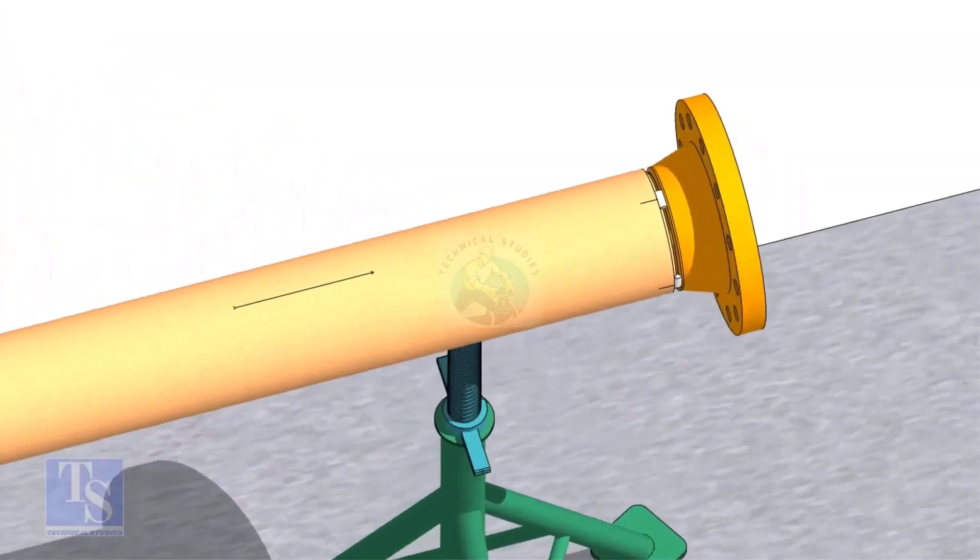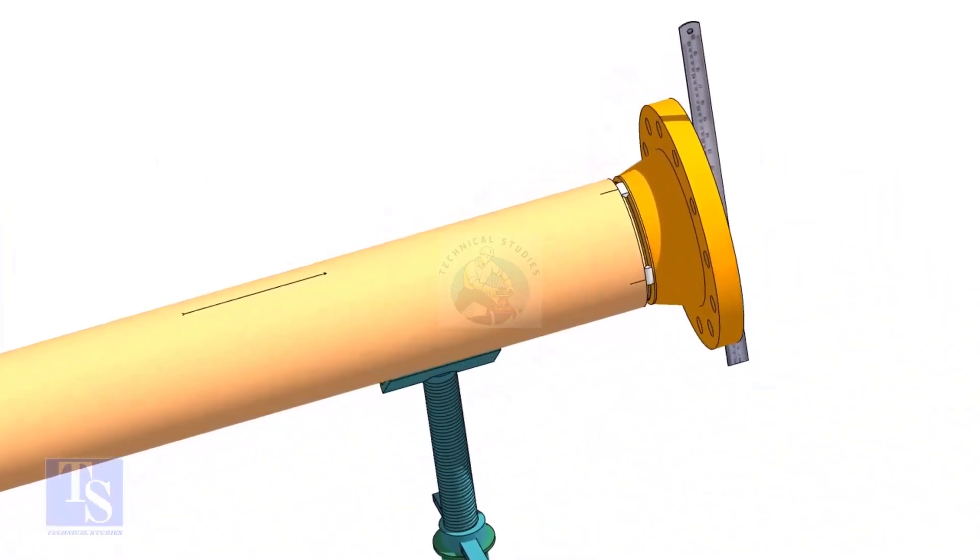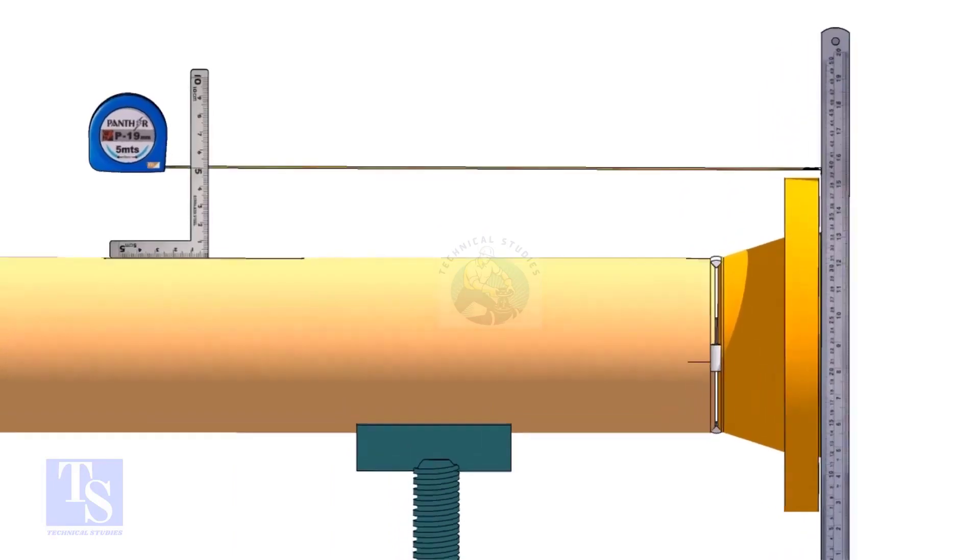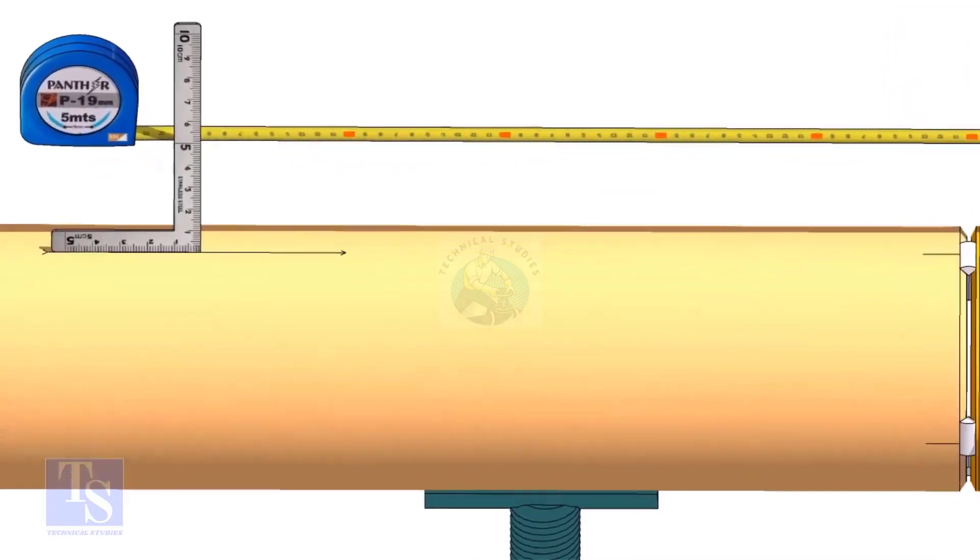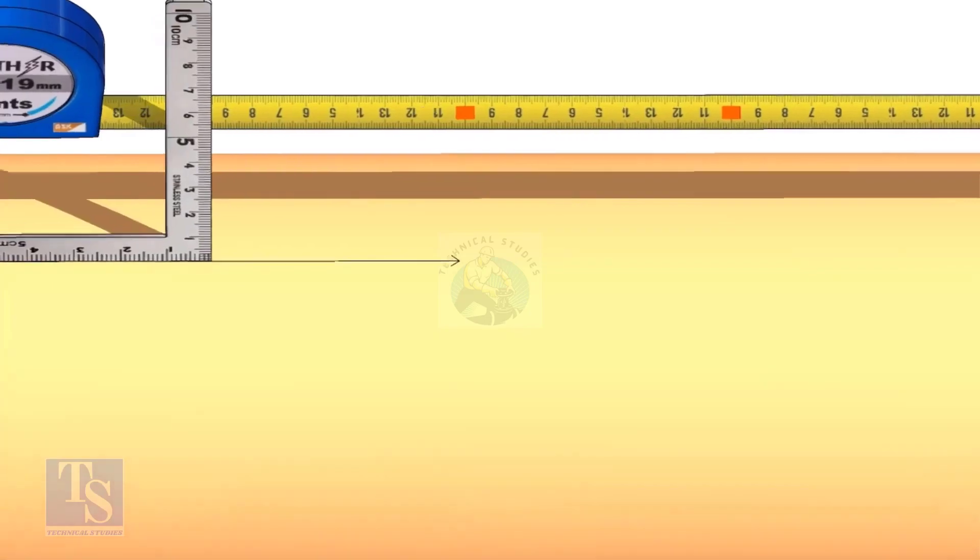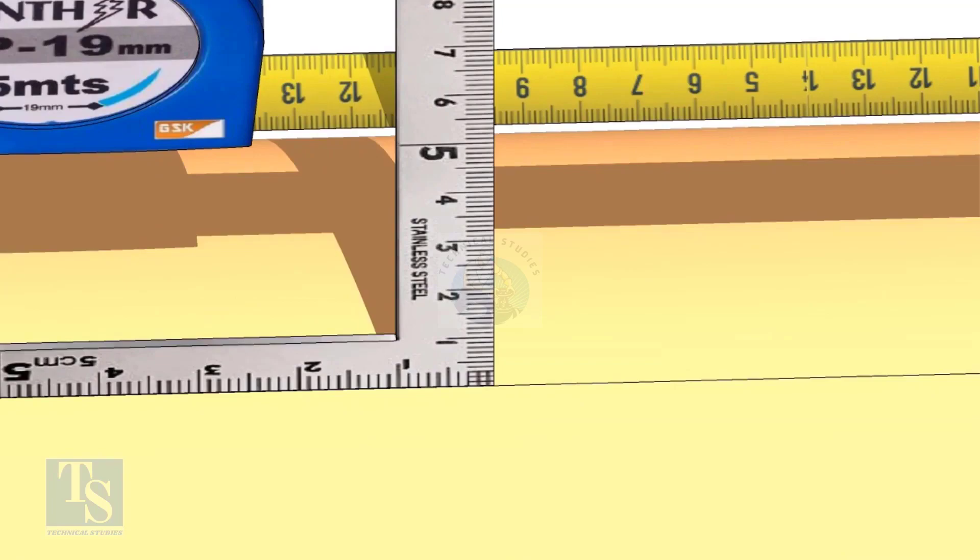Hold a steel ruler on the face of the flange vertically. Put a right angle on the pipe where the line is drawn. Move the right angle until the edge comes on 595mm on the tape. Mark on the pipe where the right angle edge touches.